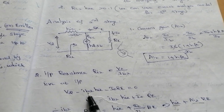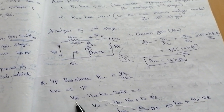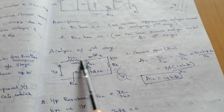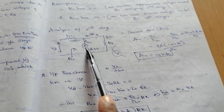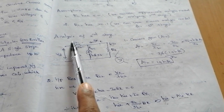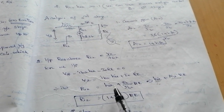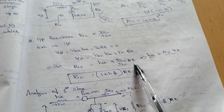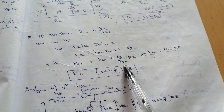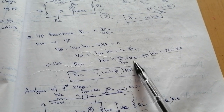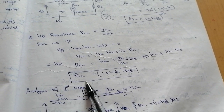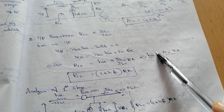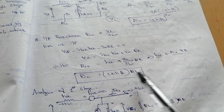The input resistance RI equals V2 divided by IB2. Applying KVL at the input side: V2 minus IB2·HIE minus I0·RE equals zero. Therefore V2 equals IB2·HIE plus I0·RE. Dividing by IB2: RI2 equals HIE plus (I0/IB2)·RE, where I0/IB2 is AI2. Since HIE is very small and can be neglected, RI2 equals (1 plus HFE)·RE.